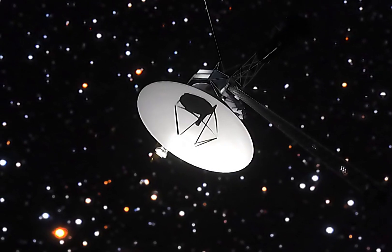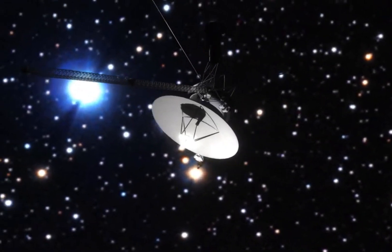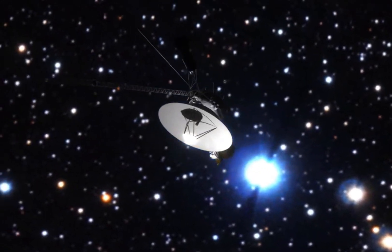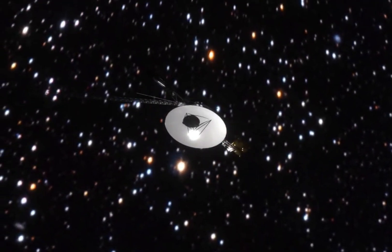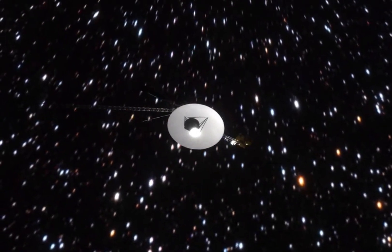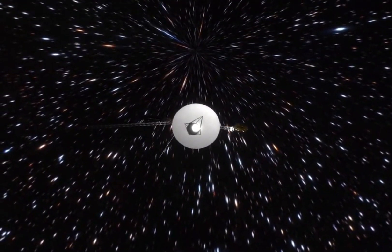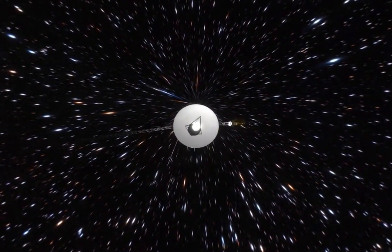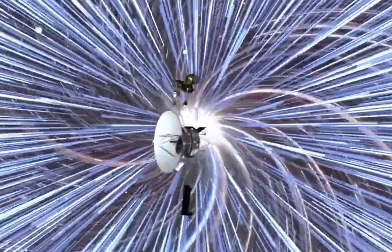A black hole is anything but empty space. Rather, it is a great amount of matter packed into a very small area. Think of a star 10 times more massive than the sun squeezed into a sphere approximately the diameter of New York City. The result is a gravitational field so strong that nothing, not even light, can escape.